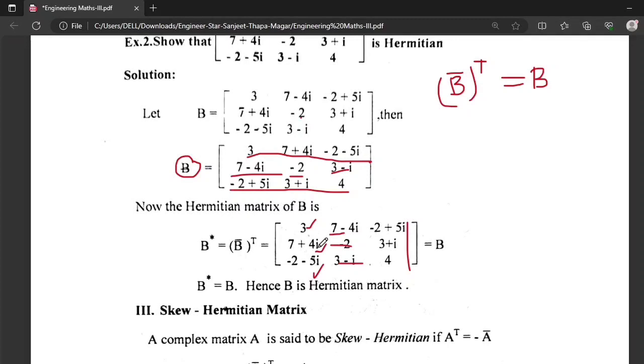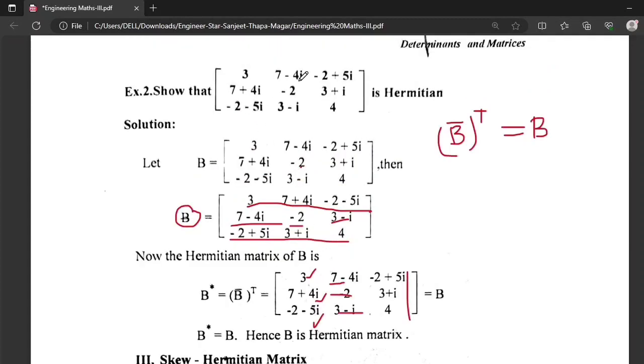So it is 3, 7-4i, -2+5i; 7+4i, -2, 3+i; -2-5i, 3-i, and 4. So this is a Hermitian matrix.